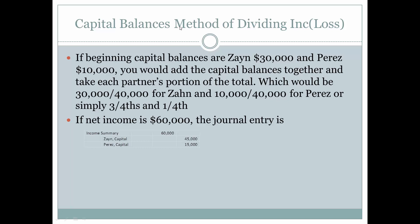The capital balances method: you must use the beginning capital balances, because once you start dividing income and accounting for withdrawals, everything changes. If beginning capital balances are Zane $30,000 and Perez $10,000, you add them together for a total of $40,000. Zane's share is $30,000 out of $40,000 and Perez's is $10,000 out of $40,000 — or simply three-fourths and one-fourth. So if net income is $60,000, the journal entry credits three-fourths to Zane and one-fourth to Perez.